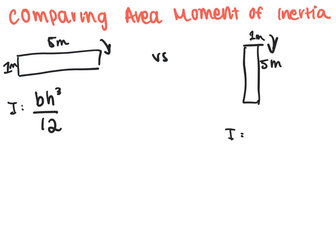So in this case, our base is going to be 5, our height cubed is going to be 1 to the third power all over 12. So for the first one, we get 5 over 12.